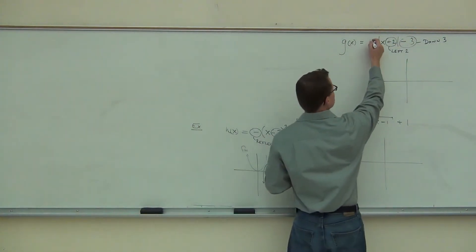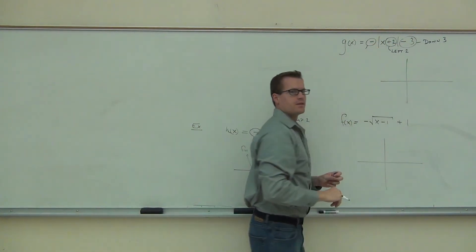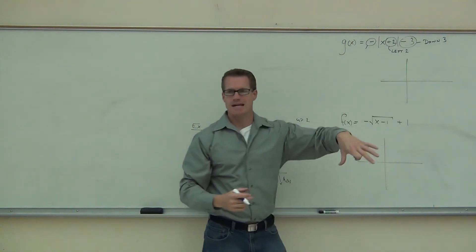And then lastly, this minus B something, what's that tell you to do? Left. That's that reflect, that's right. So it's going to be upside down V.